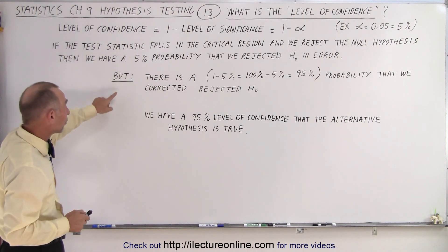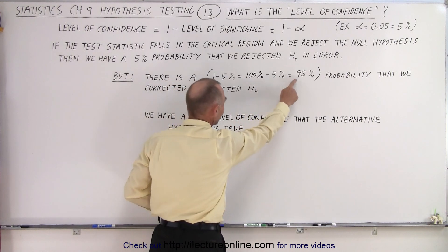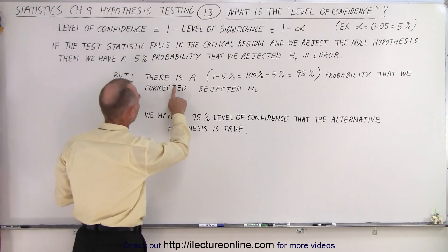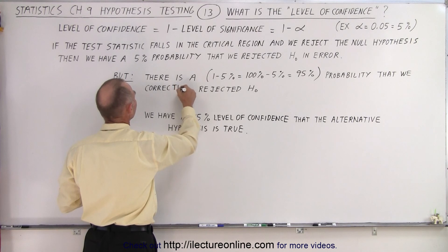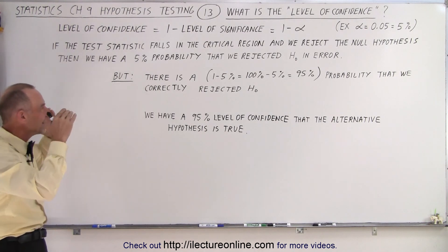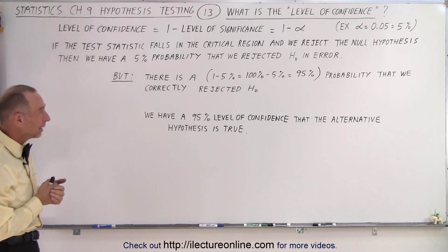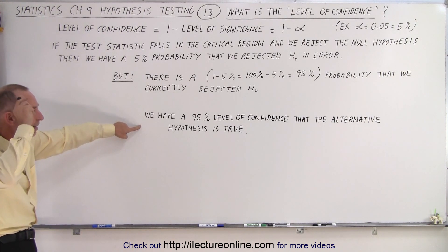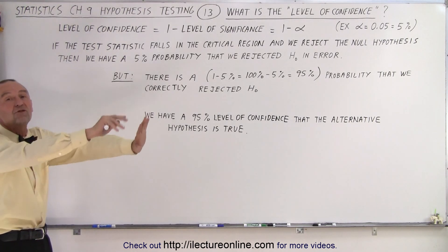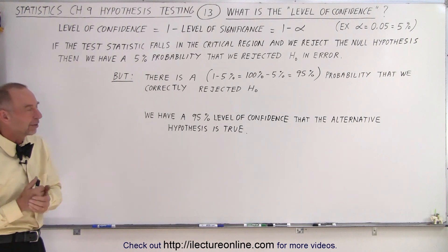We can also say it as follows: there is 1 minus 5% — that is, 100% minus 5%, which is 95%. So there's a 95% probability that we correctly rejected the null hypothesis. That's called the level of confidence. There's a 95% level of confidence that we rejected the null hypothesis correctly, and a 95% level of confidence that the alternative hypothesis is true.